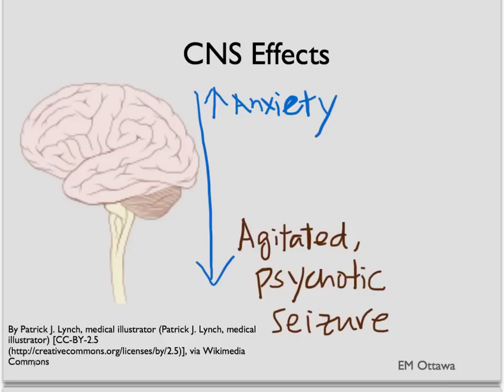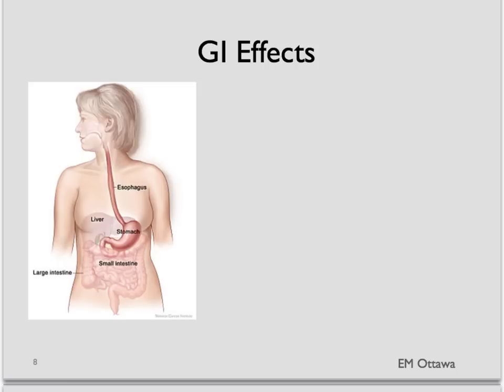Sometimes the patient could also be febrile. In the GI tract, in hyperthyroidism, there is weight loss from vomiting and diarrhea. In thyroid storm, more vomiting and diarrhea might lead to hypotension and shock.